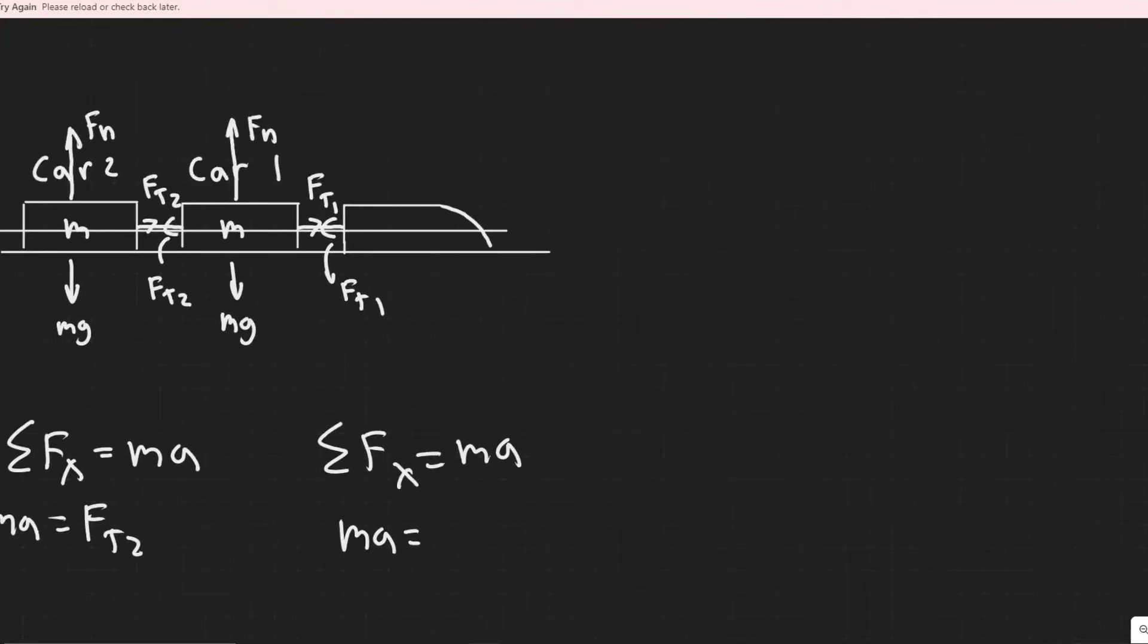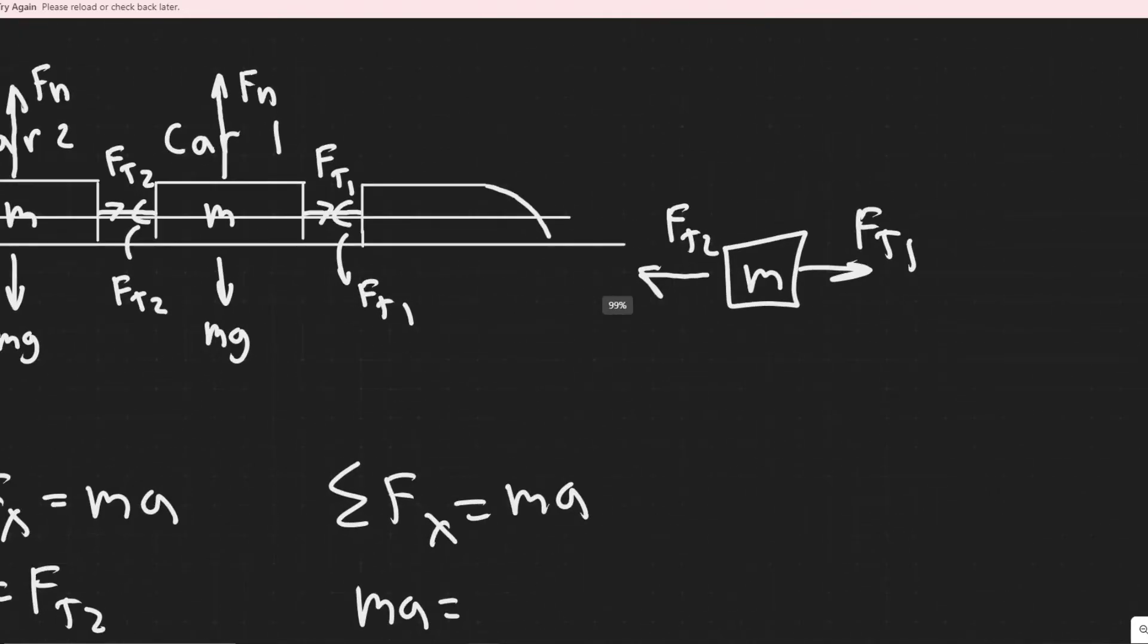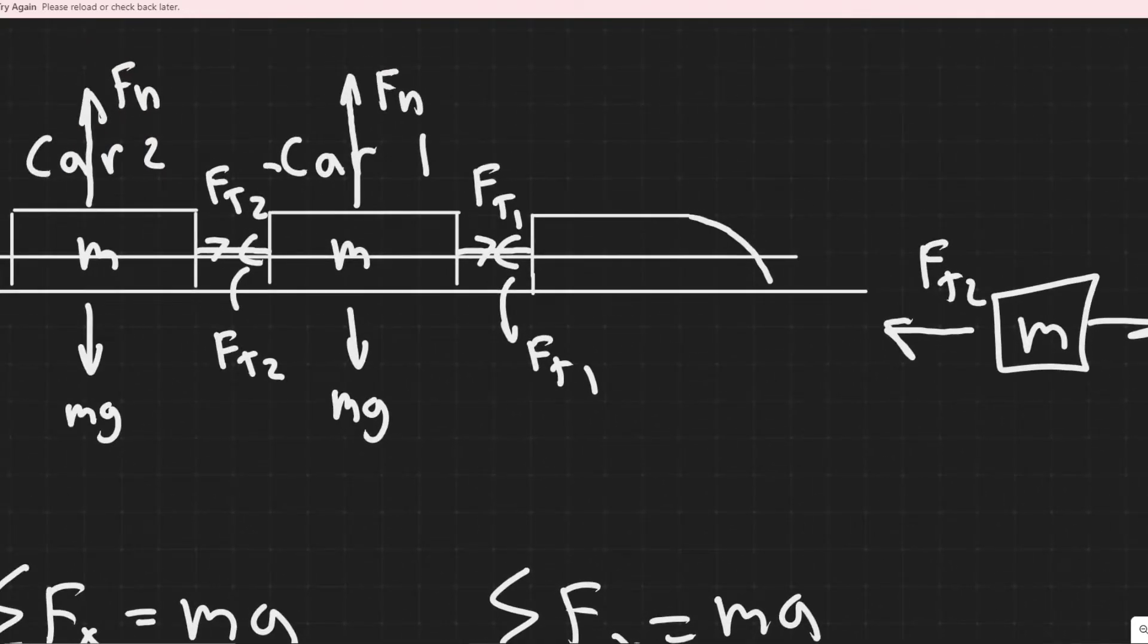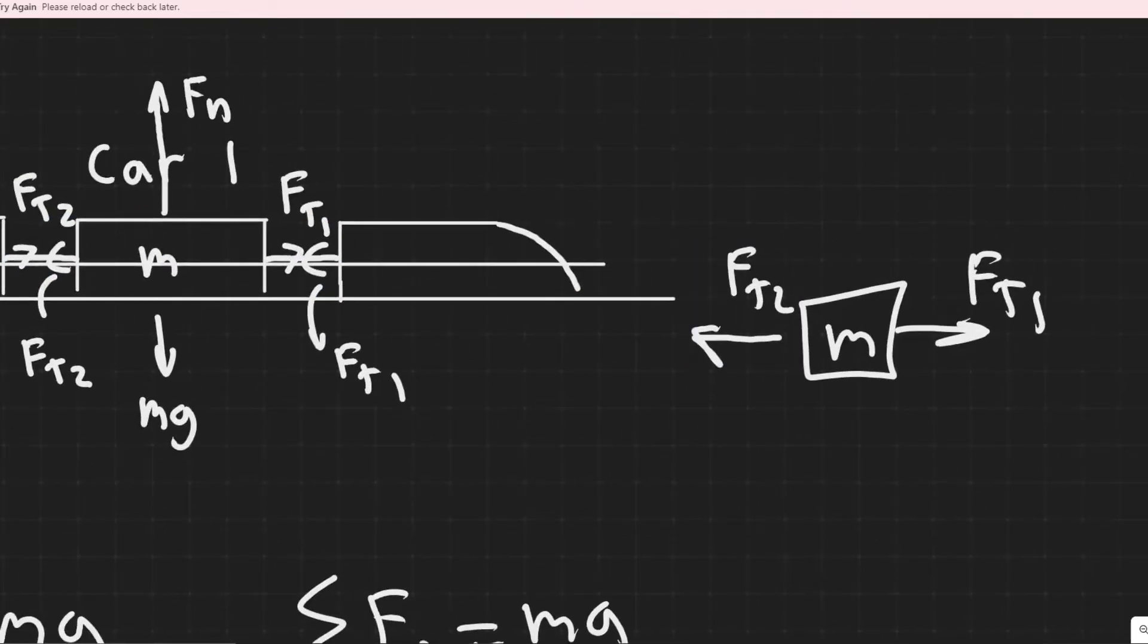But in this case, MA equals, and then if we imagine this box is the car, we know it's going to have a force of tension 1 pulling it this way. And then we're going to have a force of tension 2 pulling it this way, right, the opposite reaction. So Ft2 is going the opposite way. And that's why we needed to draw that to understand that.